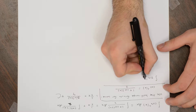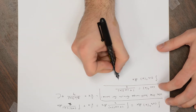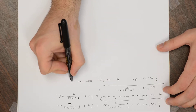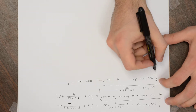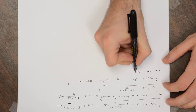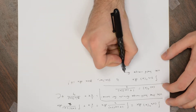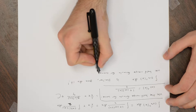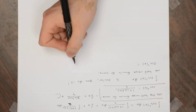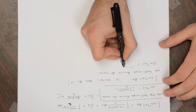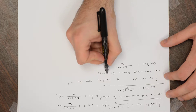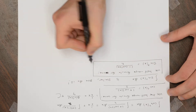The integral of sine squared x dx is similar and you should do it. You're going to use the half-angle formula for sine: sine squared of x equals (1 minus cosine 2x) over 2.